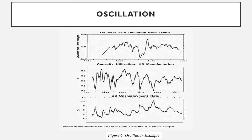Figure 6 provides an oscillation example from the business cycle in the United States. In the top panel, the deviation of the real GDP from the long-term exponential trend is shown. In the middle panel, we have capacity utilization in the U.S. manufacturing sector. And in the bottom panel, we have civilian unemployment.